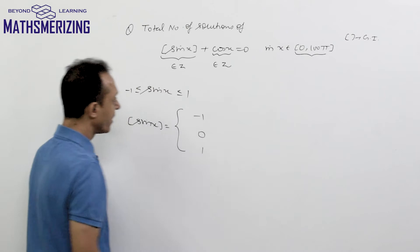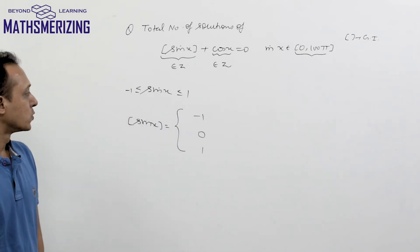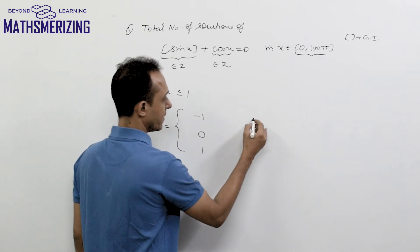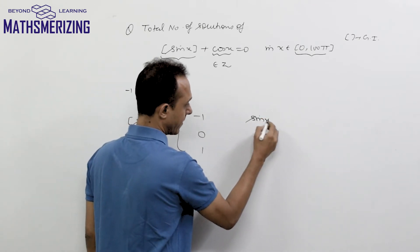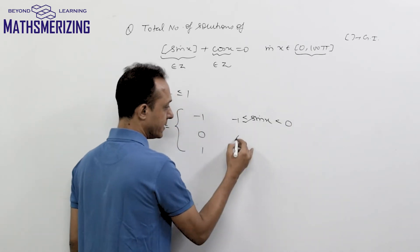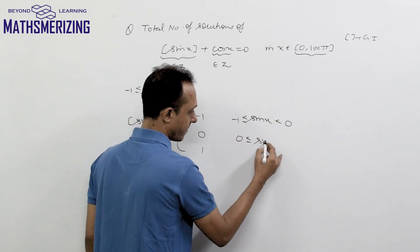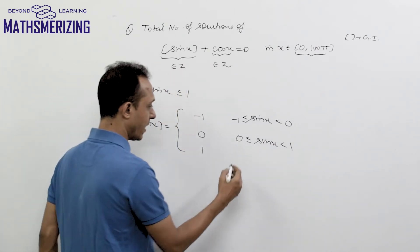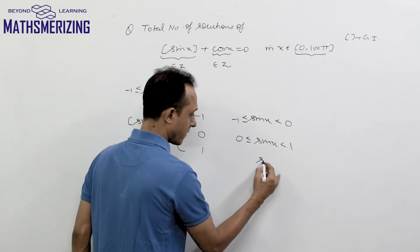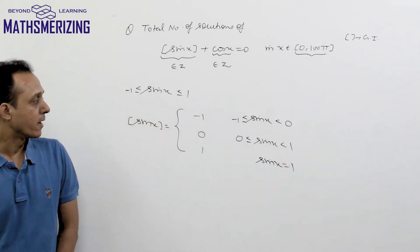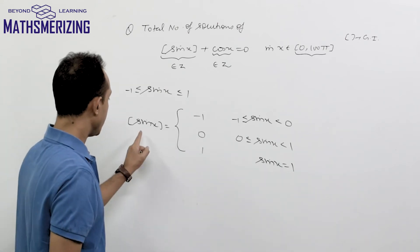[sin x] will be -1 when sin x lies between -1 and 0, it will be 0 when sin x lies between 0 and 1, and it will be 1 when sin x equals 1.